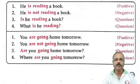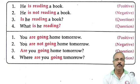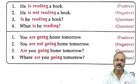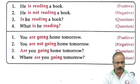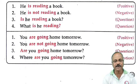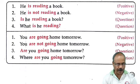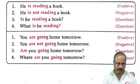Some more examples: 'He is reading a book' — positive. 'He is not reading a book' — negative. 'Is he reading a book?' — question. 'What is he reading?' — also a question. 'You are going home tomorrow' — positive. 'You are not going home tomorrow' — negative. 'Are you going home tomorrow?' — question. 'Where are you going tomorrow?' — also a question.